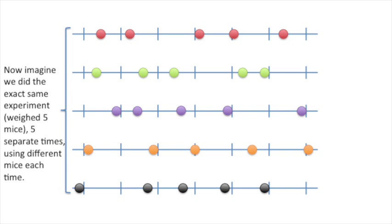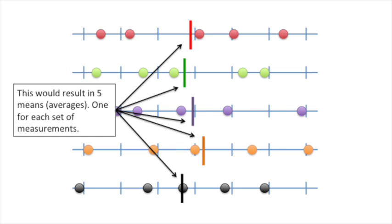Now imagine we did the exact same experiment, weighed five mice, five separate times, using different mice each time. This would result in five means, or averages, one for each set of measurements.